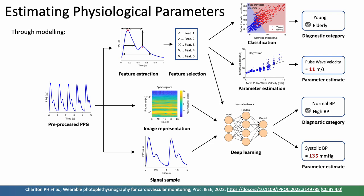More recently, deep learning has also been applied in PPG analysis and this can take these features as an input, or it can take an image representation such as a spectrogram shown here, or just a sample of the signal as an input, and these are versatile in that neural networks can both provide a diagnostic category or a parameter estimate.